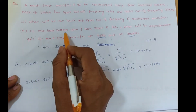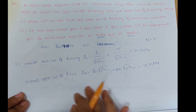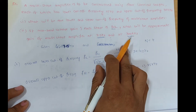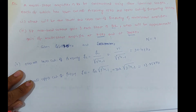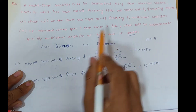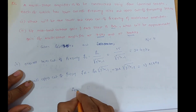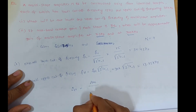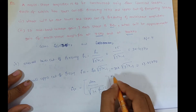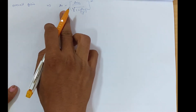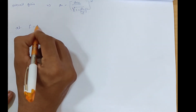For part two: midband voltage gain of each stage is 8.2. We need to calculate the overall multistage amplifier gain at f = 7.5 Hz and f = 300 kHz, considering the individual midband gain. The overall gain formula is: AV = AVM^n ÷ √(1 + (FL1/F)²)^n. We calculate at f = 7.5 Hz.